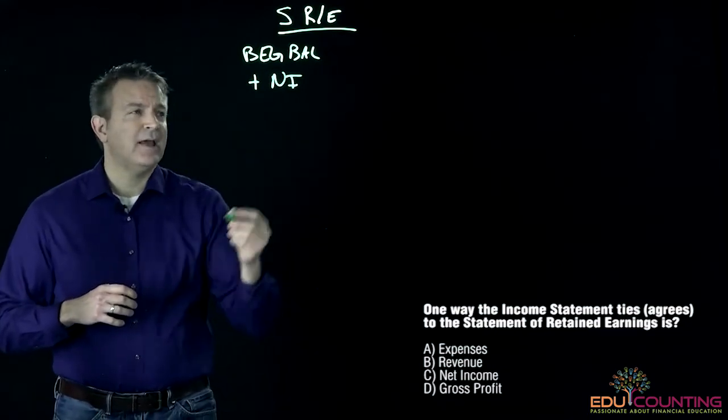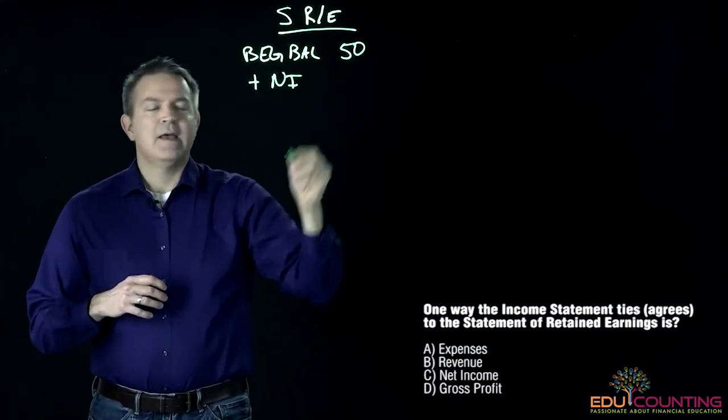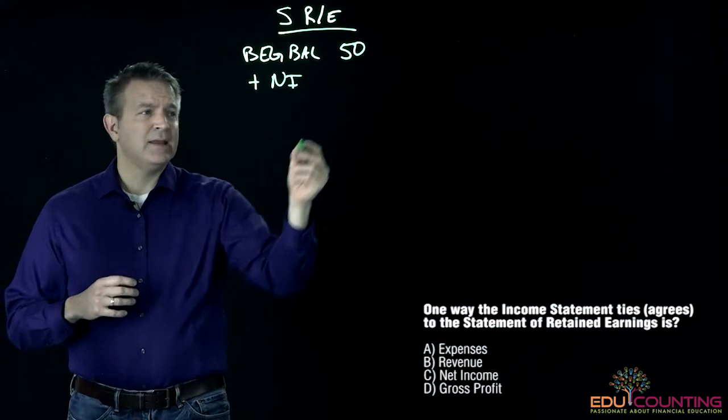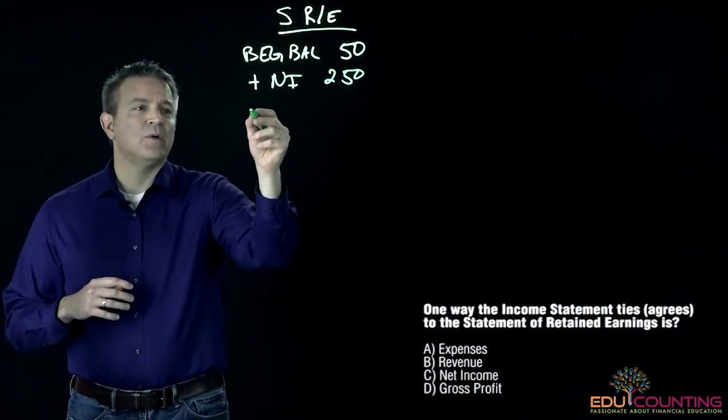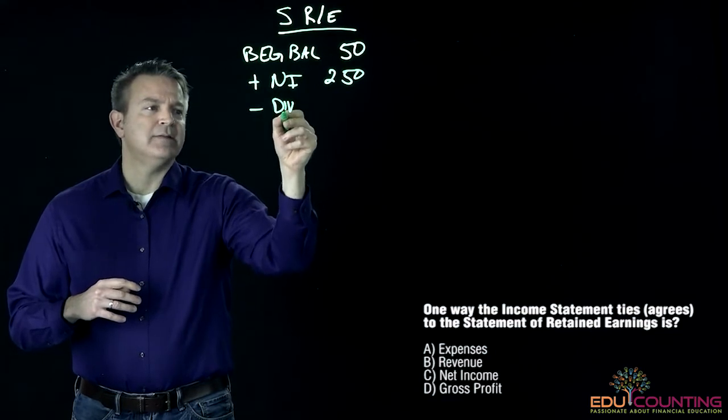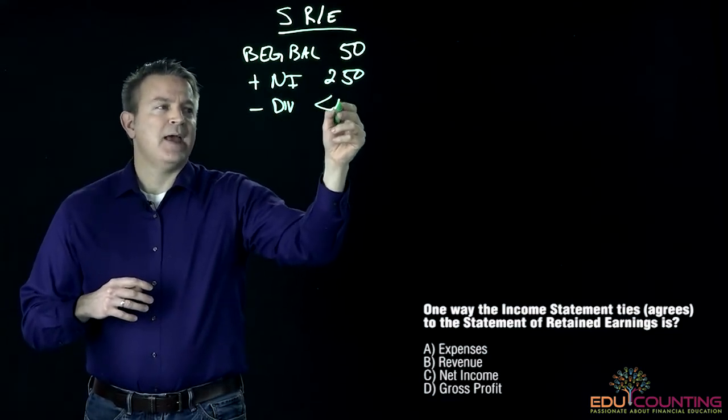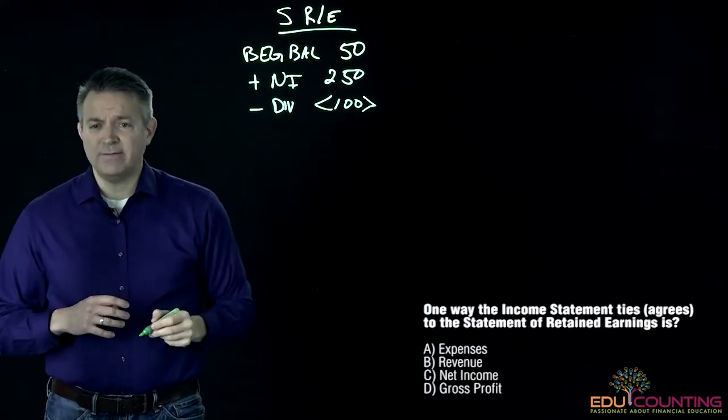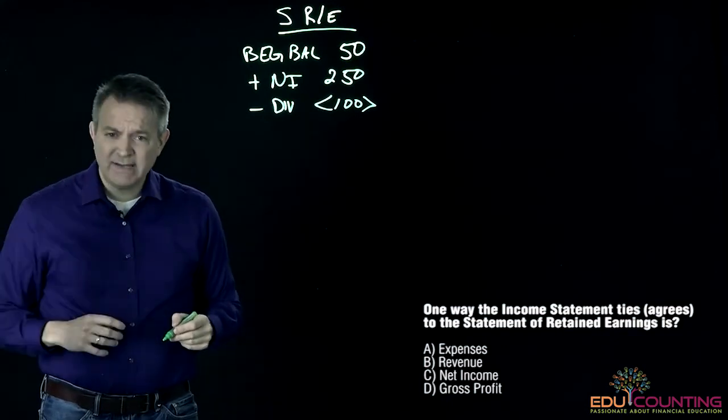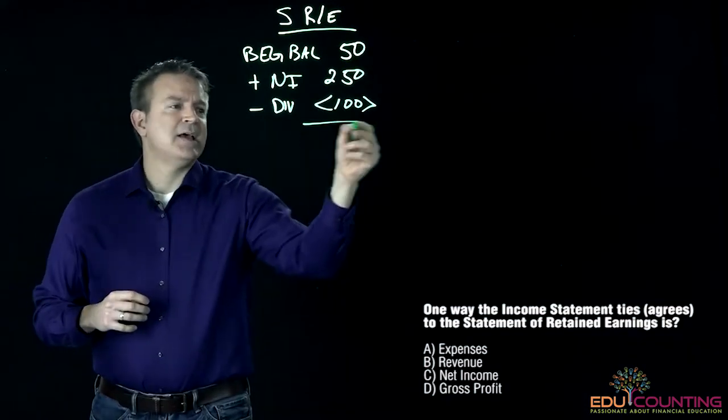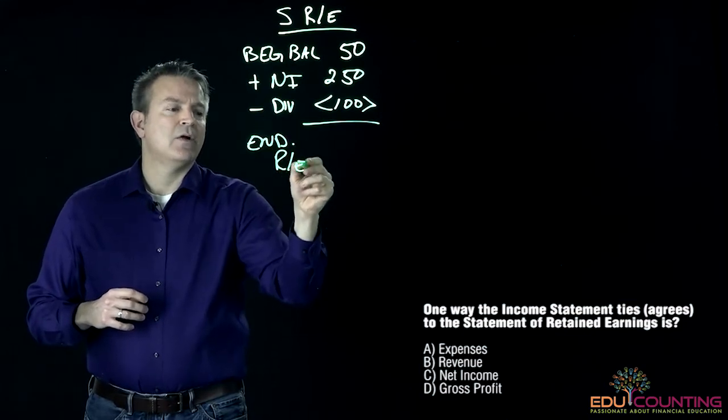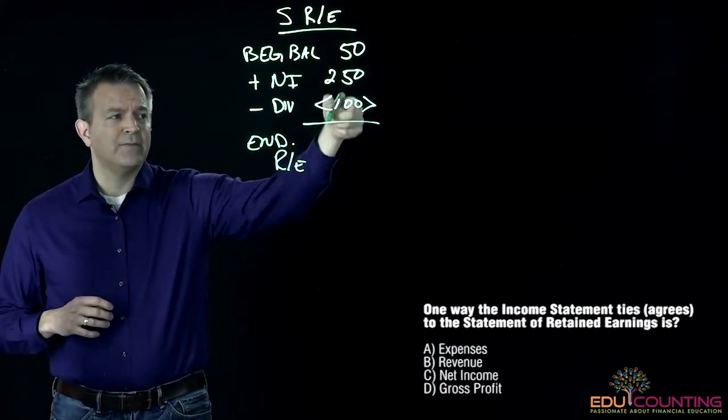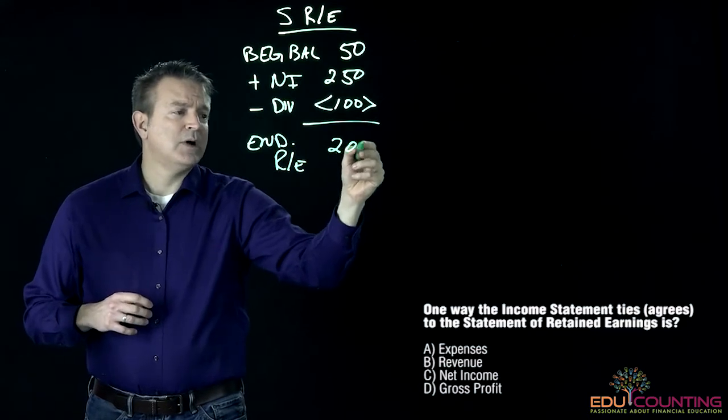We take our beginning balance and let's just make up a number, 50. If our net income turns out to be 250, we're going to add that on. Then we're going to subtract out our dividends. Beginning balance plus net income minus our dividends is going to be our ending retained earnings balance. So we have 300 minus 100, we have 200 that's left.